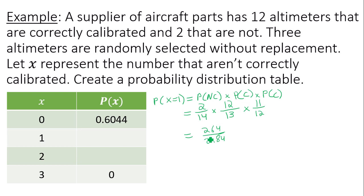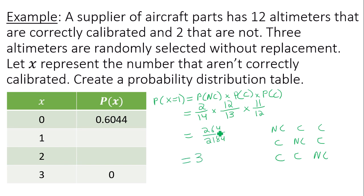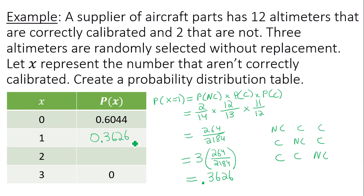This is not the answer though, because how many ways are there for you to get 1 altimeter not correctly calibrated in 3 trials? The first one drawn could be not calibrated, the second one drawn could be not correctly calibrated, or even the third one drawn could be not calibrated. So there are three different ways total. Take the probability 264 out of 2,184 and multiply it by 3, and you will get 0.3626.